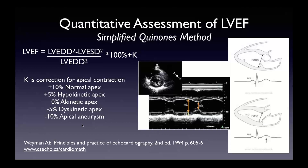The simplified Quinones method is not recommended, though it might have some limited utility in left ventricles that are globally affected, where you have global hypokinesis and a relatively symmetric abnormality. More practically, this is a useful method of checks and balances — if you think the LV ejection fraction is normal but you do the simplified Quinones method and it comes up abnormal, then either your dimensions at the base are incorrect or you've made an erroneous assessment of the LV ejection fraction.